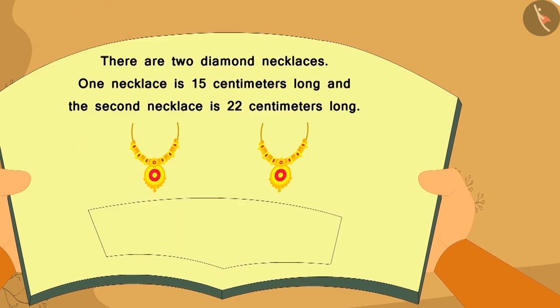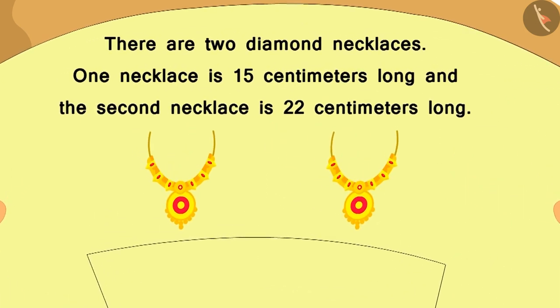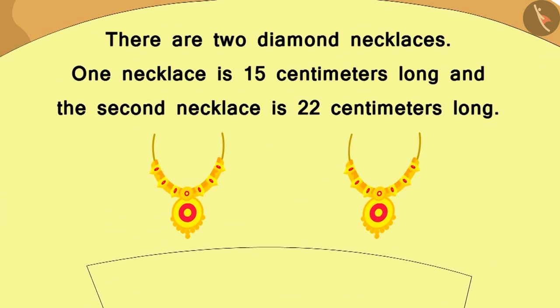Now, Chanda immediately turned the page of the book and she saw this picture. There are two diamond necklaces here. One necklace is 15 cm long and the second necklace is 22 cm long.